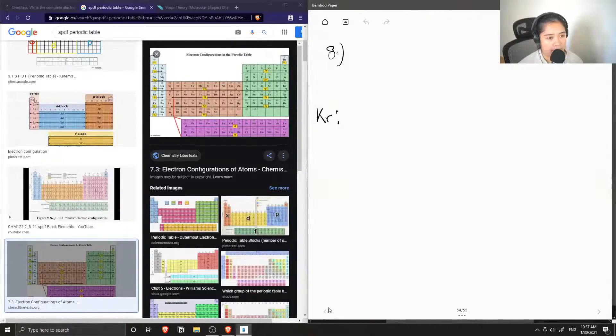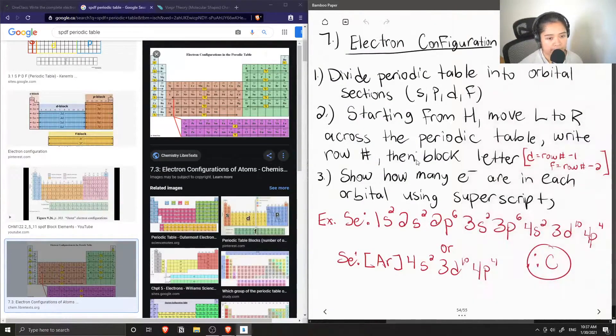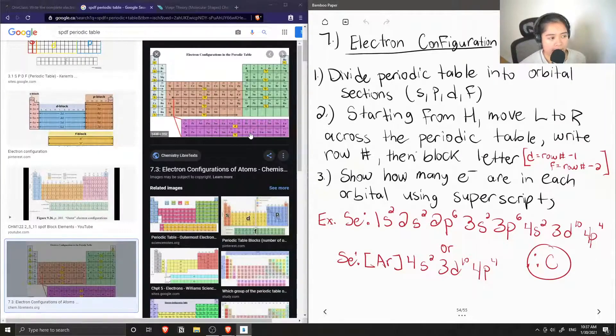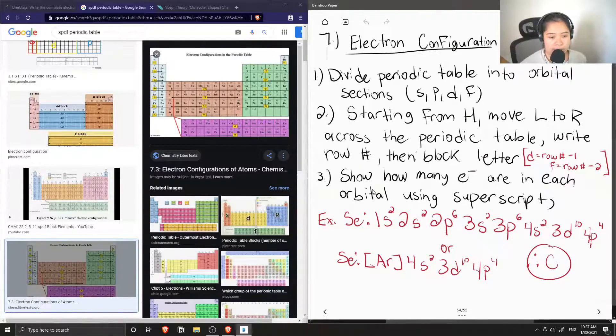So I have the rules written here. So once we get to the D block we write the row number minus one, and then once we get to the F block we write the row number minus two, and then we can show how many electrons are in each orbital using superscripts.